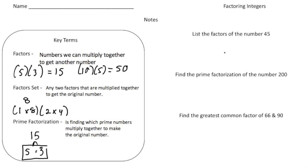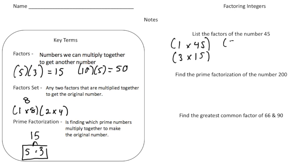The first question says list the factors of the number 45. I know that 1 times 45 gives us 45. And 45 is divisible by 3, so 3 times 15 also gives us 45. And 5 can go into 45 nine times, so 5 times 9 are also factors of 45. And that is it for that one.